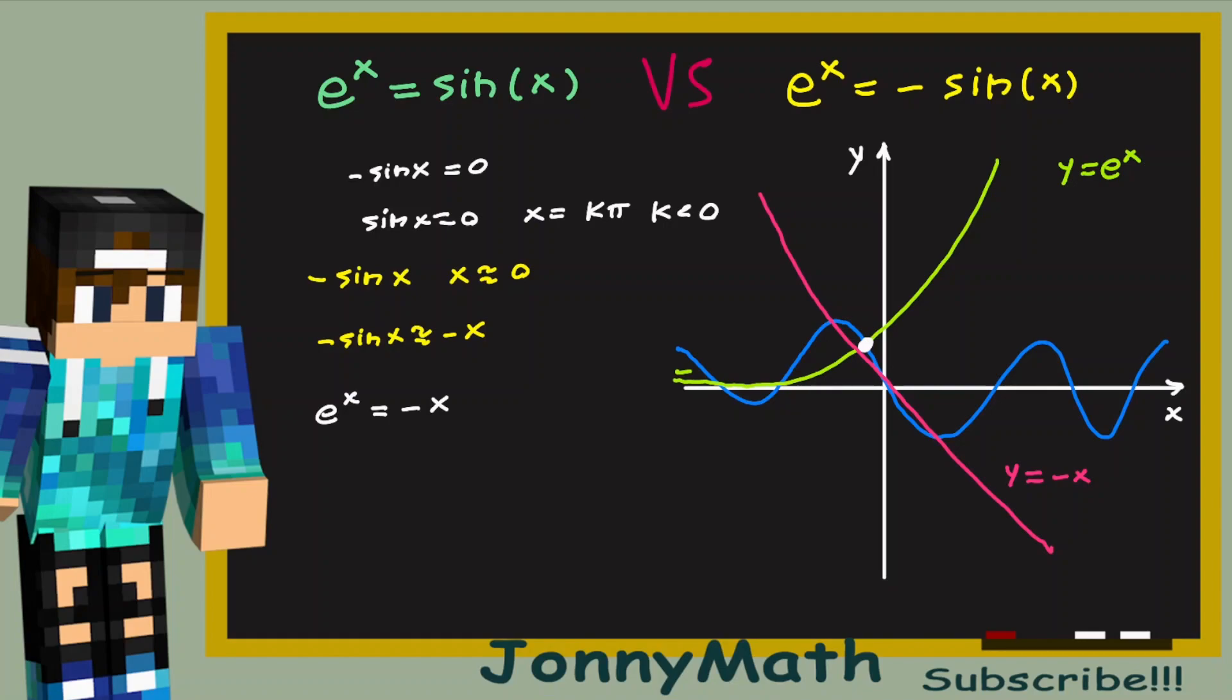And now this equation turns out to be a lot simpler because we can bring e to the x to the other side. So minus x e to the minus x. We divide both sides by e to the x equals to one.